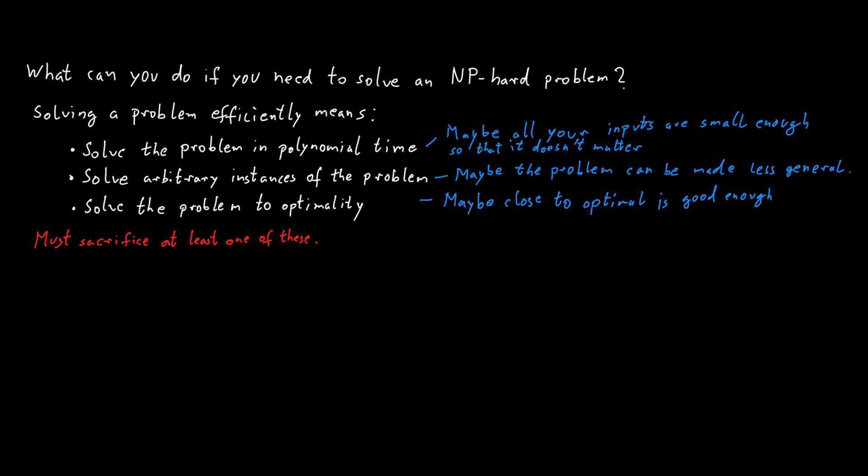But rather than just hoping that our solutions are probably good enough some of the time or most of the time, we want real guarantees. Again we want to have mathematical proofs that our algorithms satisfy certain properties rather than just hoping for the best. To this end we define the concept of an approximation algorithm.